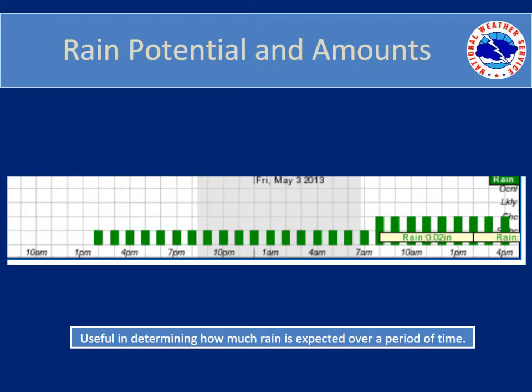The final part of the default hourly weather graph is the rain potential and rainfall amount section. The rainfall potential will match up with the precipitation potential for the most part. The exception is during the winter if instead of rain, snow or freezing rain is expected — in that case, you may have 20% for precipitation potential but nothing listed for rain potential, and another graph would be shown with a slight chance of snow. This graph also shows how much rain is expected over a period of time.